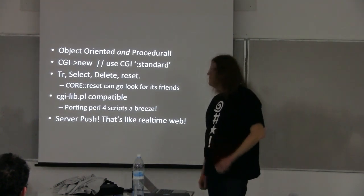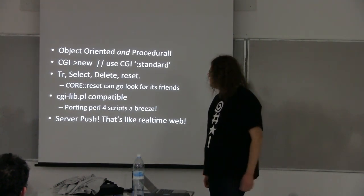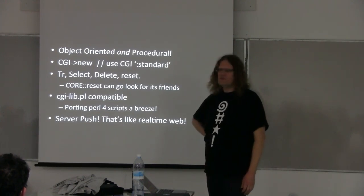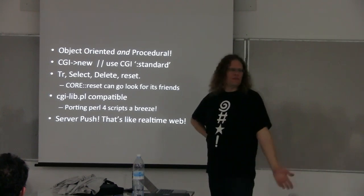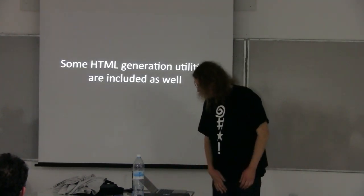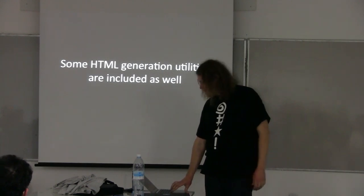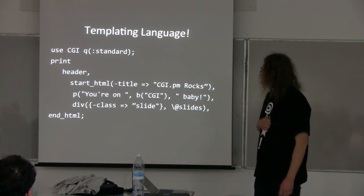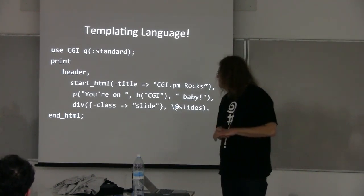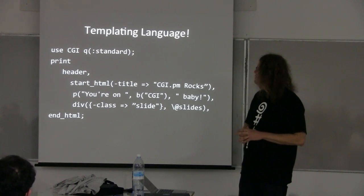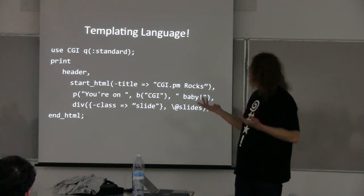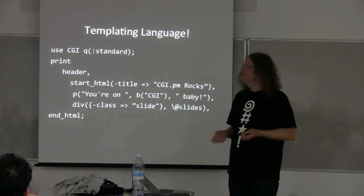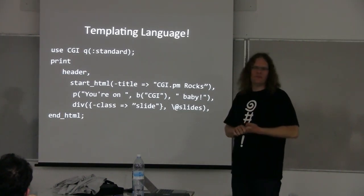CGI lib PL compatible — that's a strong permission, porting your old fault scripts is a breeze. It has server push, which is like real-time web. Some HTML generation functions are included, so we're talking about basically a built-in templating language, which is actually pretty readable. And there are templating libraries on CPAN which are even more compact for presenting tables.